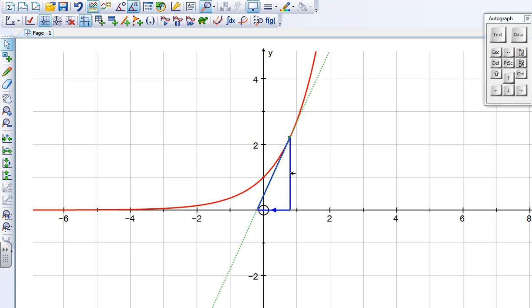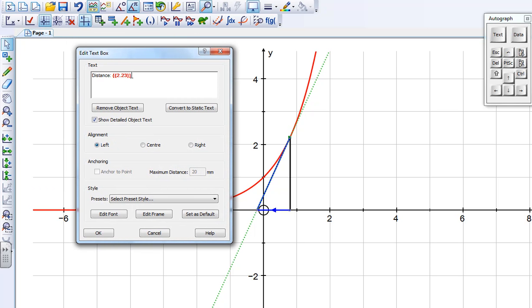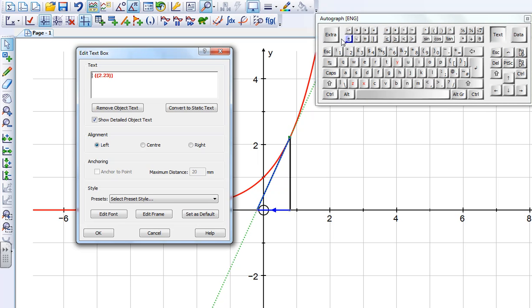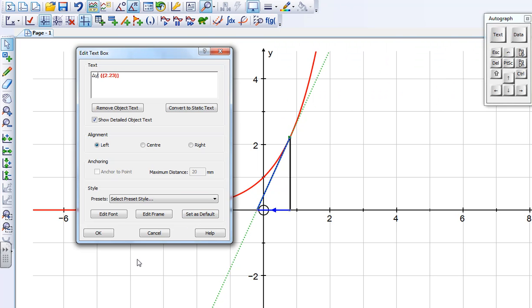The last thing we can do is just label this, so if I select that vertical length and then go to textbox, it's giving me the distance. I'm going to label it as delta y instead of distance, and so using my keyboard in the extra section I've got the delta, so call it delta y. Let's get rid of those and then okay.